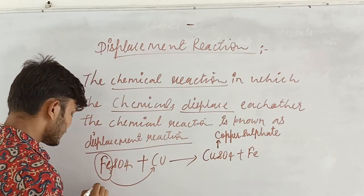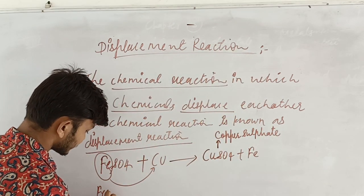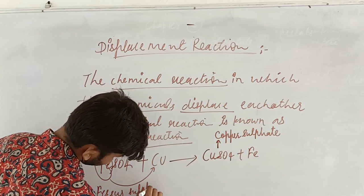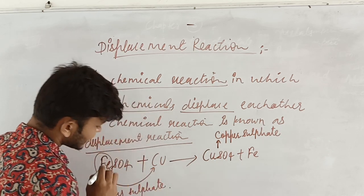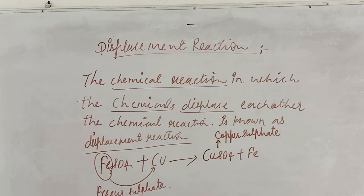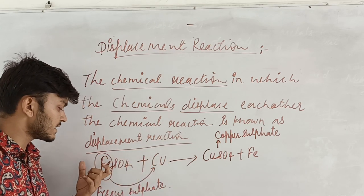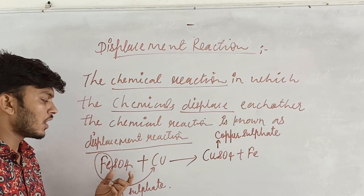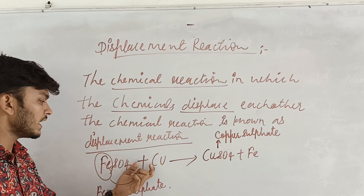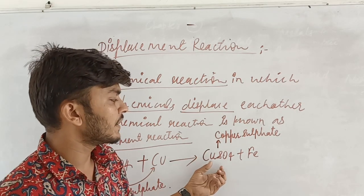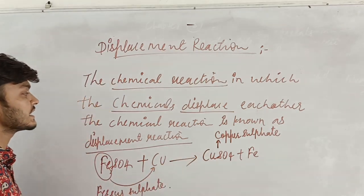There was ferrous sulfate. Ferrous sulfate is reacting with the copper. Copper is displacing the ferrous. And now, it has taken the place of ferrous and converted into copper sulfate. That is a very basic reaction.